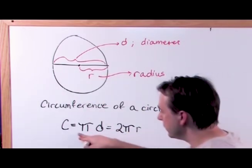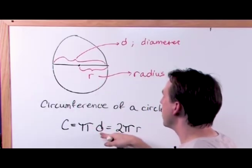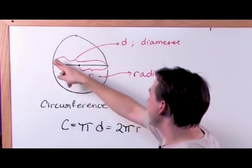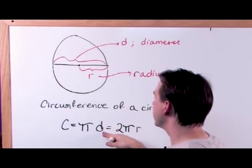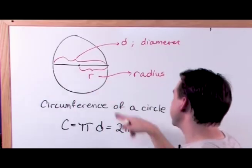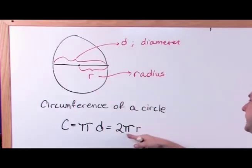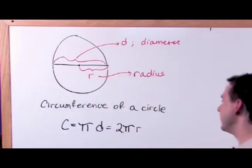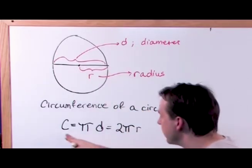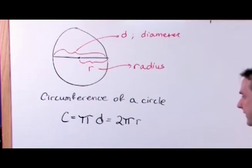Sometimes you use one formula depending on what you have. Maybe you have the diameter in your problem and you can use pi d. Sometimes you only have the radius and you use two pi r. But if you're given the radius, you just multiply by two to get the diameter — so it's the same thing.